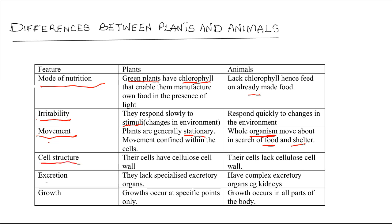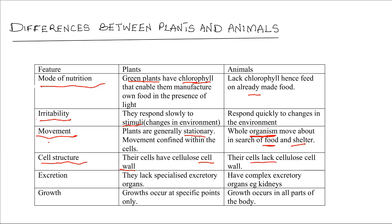Their cell structure also differs in a number of ways. In plants, the cells have a cell wall, while in animals, the cells do not have any cell wall.